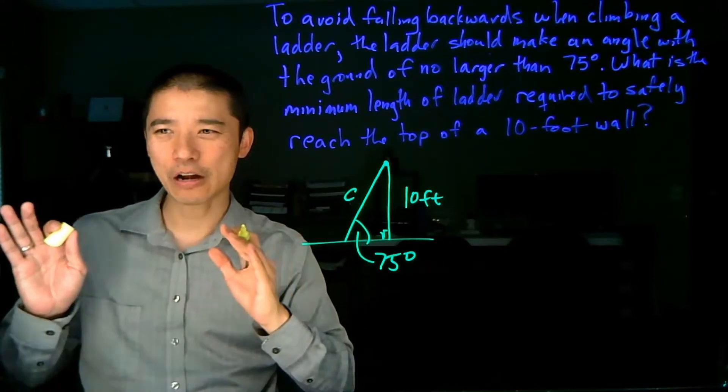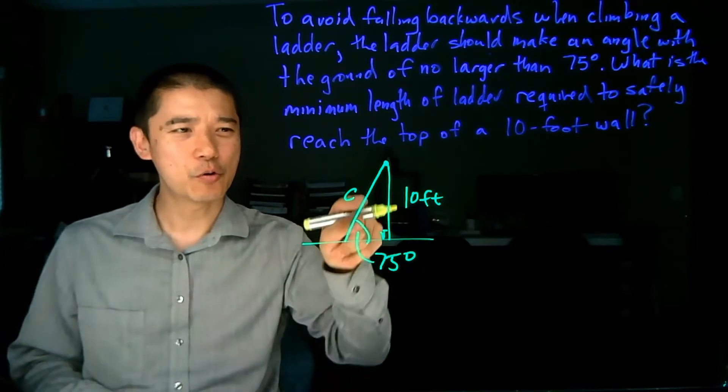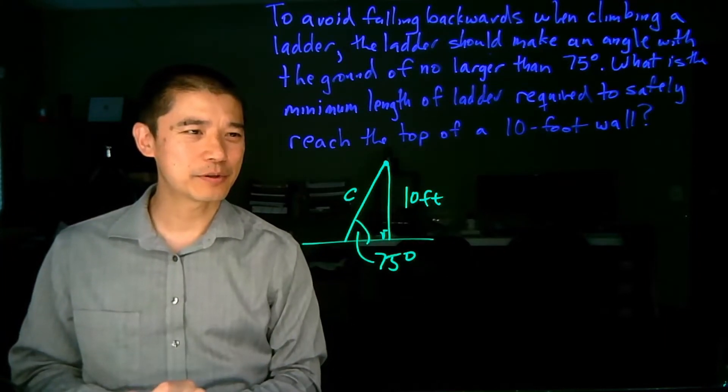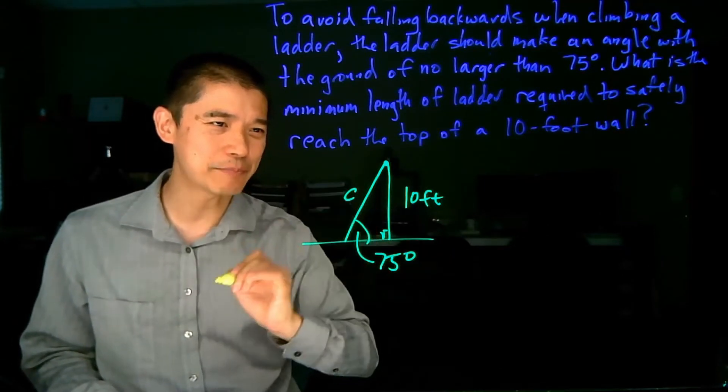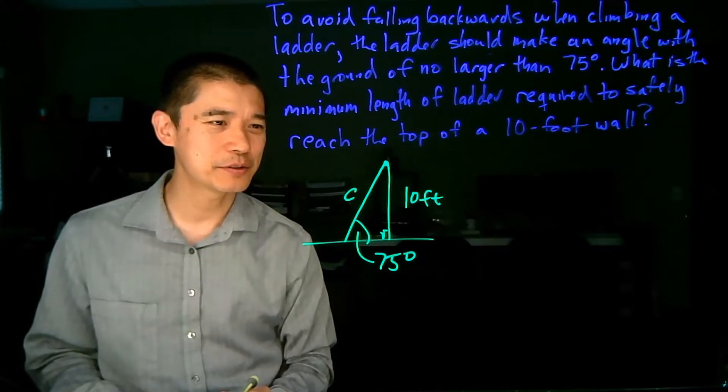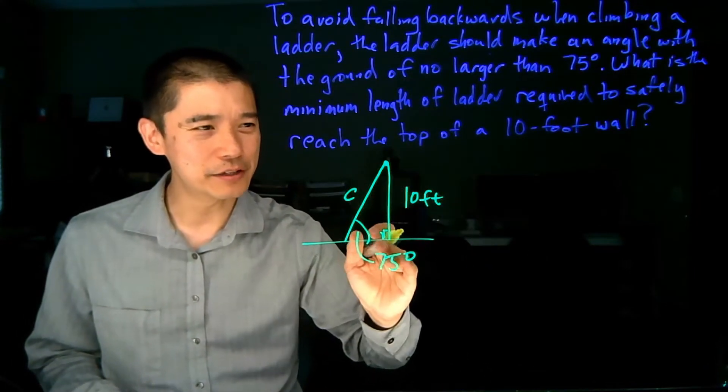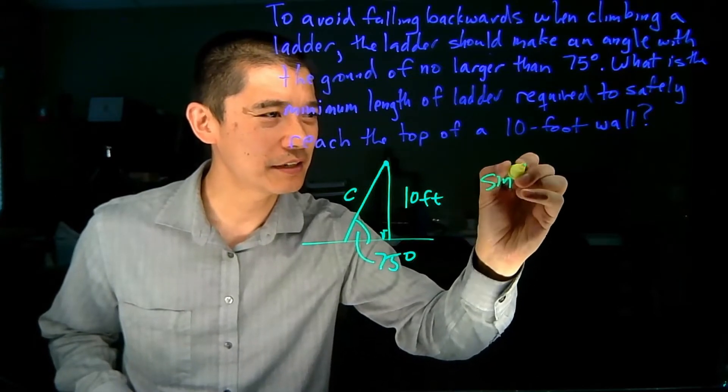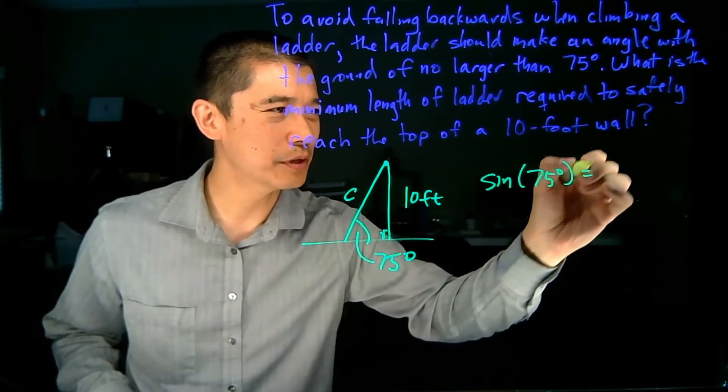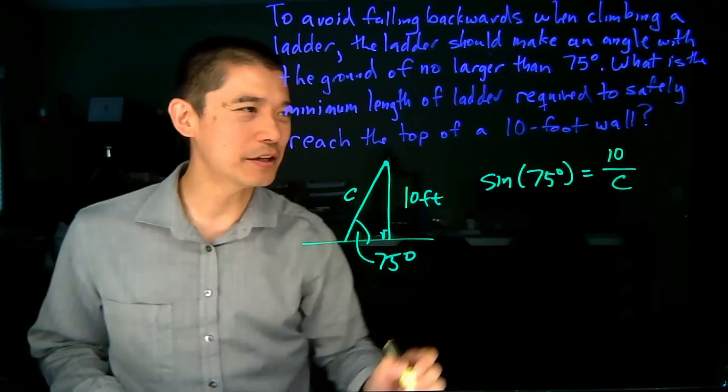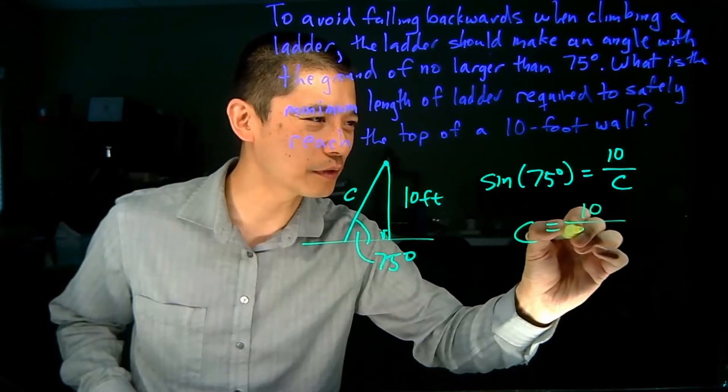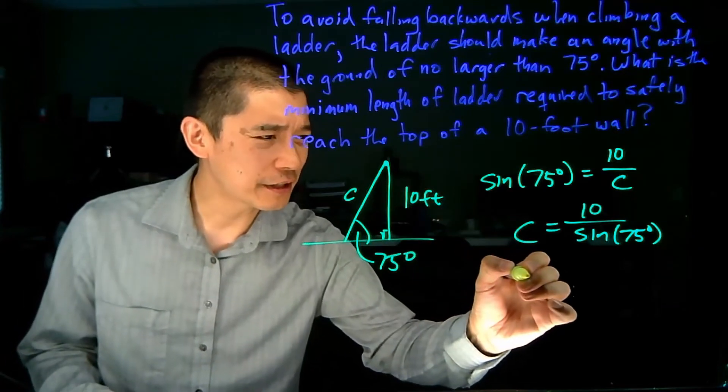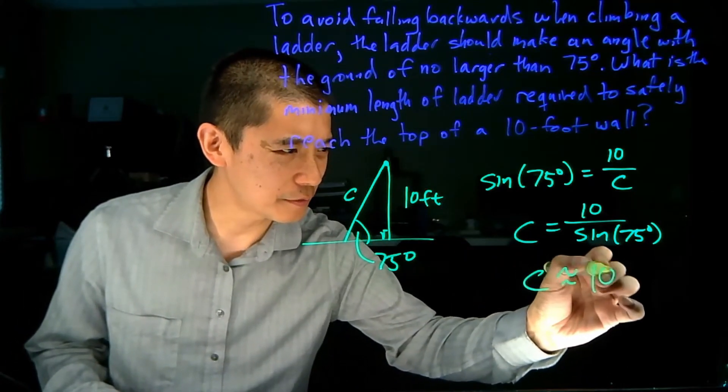Once we have the picture set up, what do we need to do? We need to figure out which trigonometric function will lead to this relationship. So what do we have here? We've got a 75 degree angle, we've got the opposite side, we've got the hypotenuse. So opposite hypotenuse, that's sine. So sine of 75 degrees is equal to the opposite over the hypotenuse. We can now solve for c, c is equal to 10 over sine of 75 degrees. And when you plug this into a calculator, you get that c is approximately 10.4 feet.